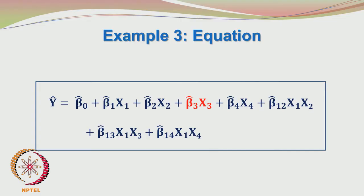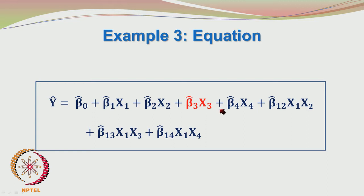We can write down the model equation. It has the intercept and terms due to factor A, factor B, factor C, factor D, interaction between A and B, interaction between A and C, and interaction between A and D. Based on the ANOVA table, β₃x₃ is a candidate to be removed from the model because factor C is not significant.